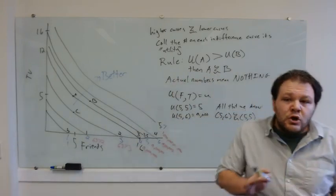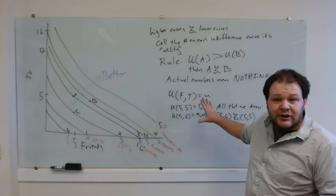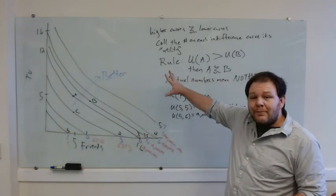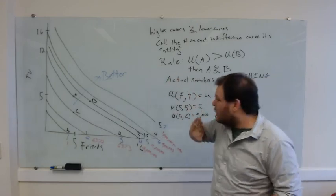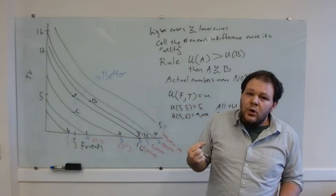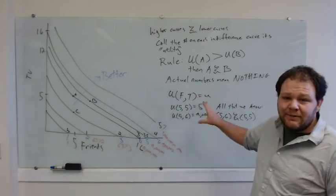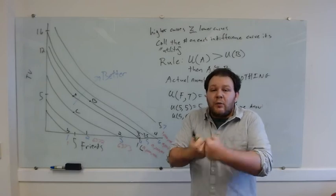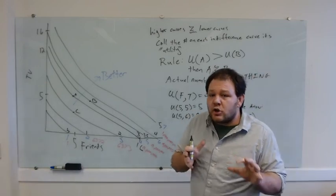A utility function is simply a way of ranking indifference curves from worst to best, where higher numbers mean you prefer something over other things. In the next video, we're going to talk about how to address what utility functions alone can't tell us — how much we value one thing relative to something else — using a tool called the marginal rate of substitution.